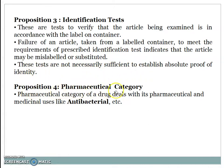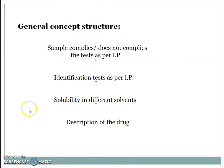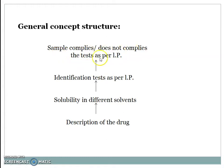Proposition 4: pharmaceutical category of the drug deals with its pharmaceutical and medicinal uses, like antibacterial. The general concept structure: first we perform description of the drug, then solubility in different solvents, then identification tests as per IP, and after performing identification we determine whether the sample complies or does not comply with the test as per Indian Pharmacopeia.